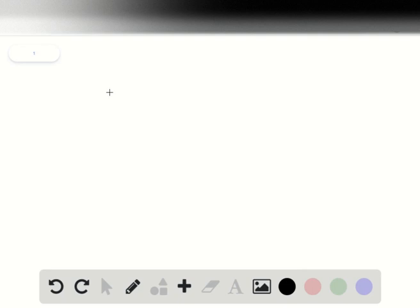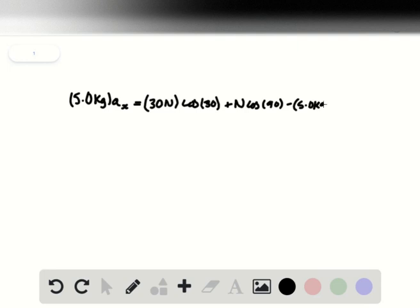We start by writing out our equation. We'll write it as: (5.0 kg)ax = (30 N)cos(30°) + N·cos(90°) - (5.0 kg)(9.81 N/kg)cos(60°). This is our first equation.